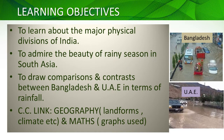Here we have the learning objectives: to learn about the major physical divisions of India — there are four major physical divisions we will be seeing today. Second is to admire the beauty of the rainy season in South Asia. We will draw comparisons and contrasts between Bangladesh and UAE in terms of rainfall. The CC link is geography, because we are talking about landforms and climate, and it is also linked with maths because you have the graphs.